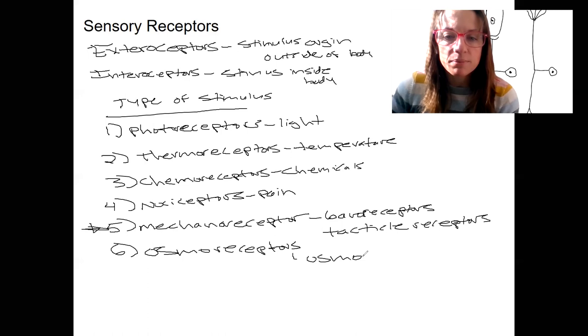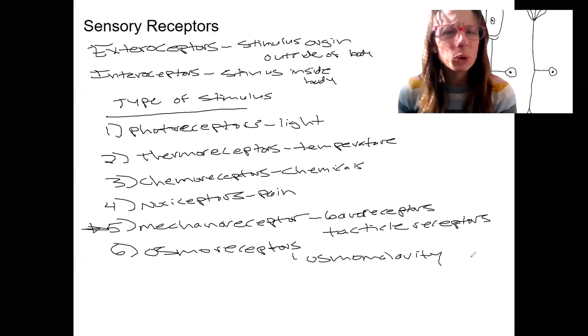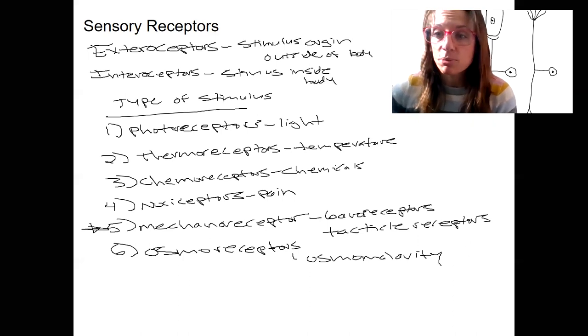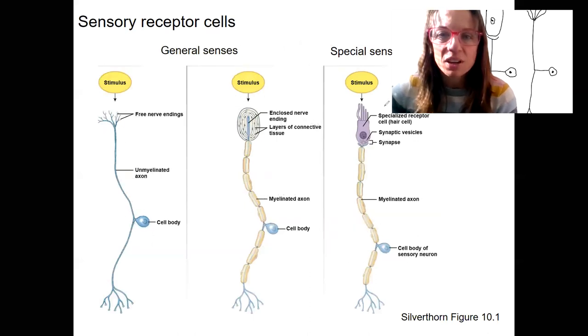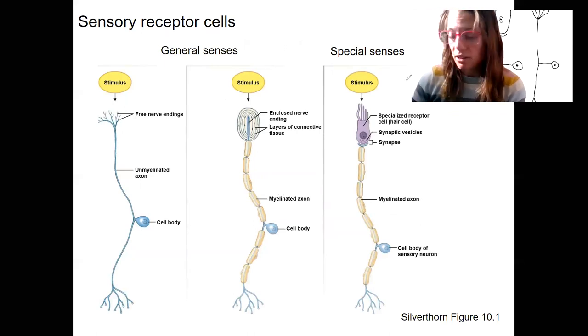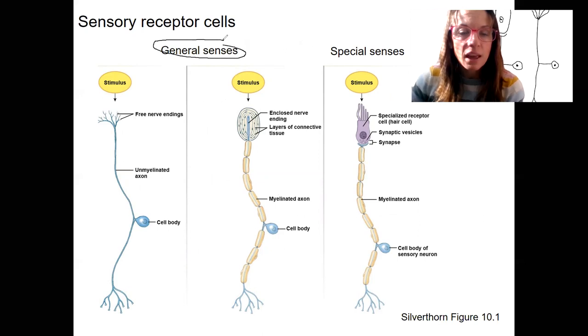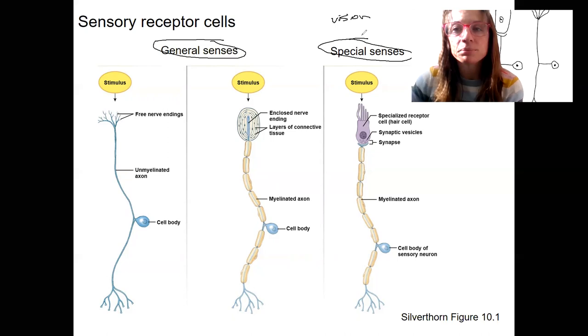We won't talk much about these this semester. So these are all specialized to detect certain stimuli. We'll look at some of them more specifically. The last thing I want to tell you about receptors for now in terms of broad is these different ways they can look. So there are receptors for general senses, and there's receptors for special senses. Special senses are much more complex in terms of the whole organ that makes them up. So this would be vision is the one that we will look at most closely. Taste, smell, hearing, equilibrium are all special senses. They have special organs that help them work.